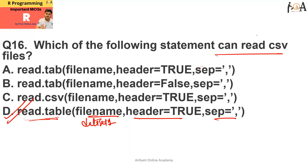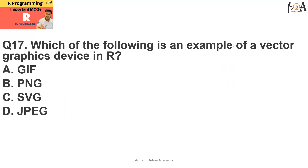Question number 17: which of the following is an example of a vector graphic device in R? SVG (Scalable Vector Graphics) is the correct answer. While different formats exist such as GIF and PNG, SVG is the example of a vector graphic device in R.